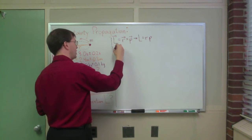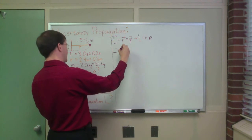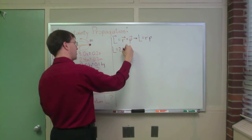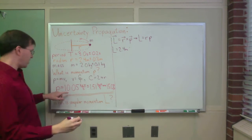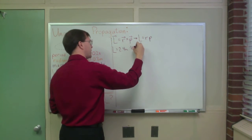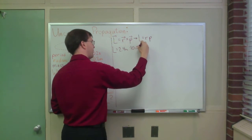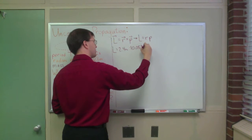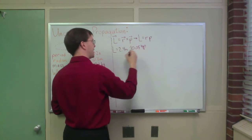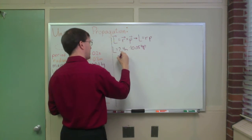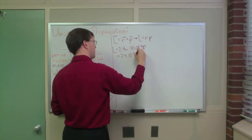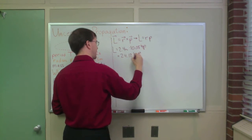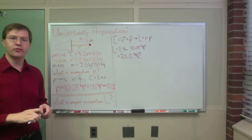So I can work this out. L equals my radius, 2.4 meters, times my momentum, which was 10.05 kg·m/s. That comes out to be 24.12 kg·m²/s. That's my base value for L.